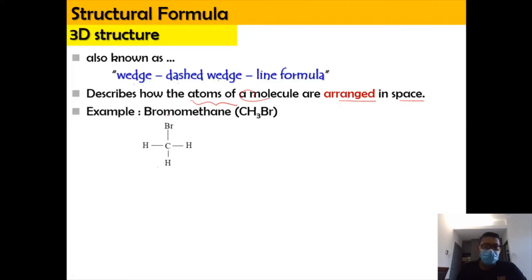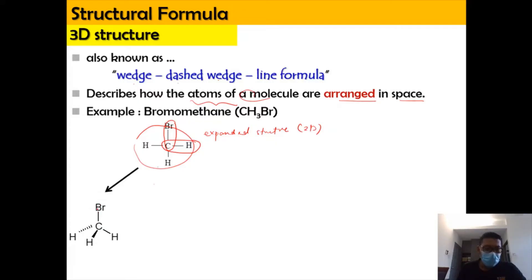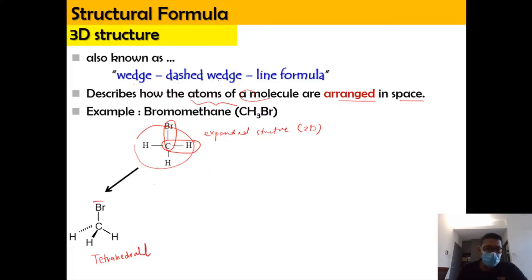Here is an example drawn in 2D form, which is CH3Br — this is the expanded structure in 2D. Now we're going to transform the 2D form into a 3D shape. We can select 2 bonds to be in the same plane, and the other bonds will be represented as out of the paper or behind the paper — basically the same tetrahedral shape you learned last semester. The bold line means it is out of the plane, and the dashed line means it is below the plane.